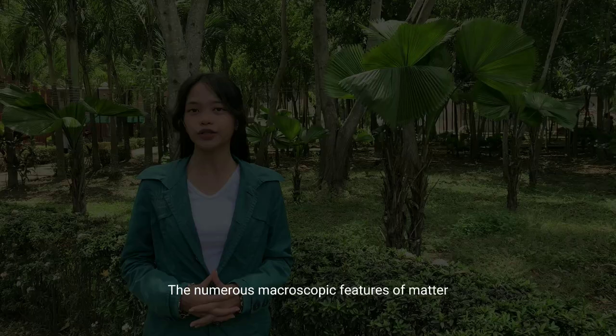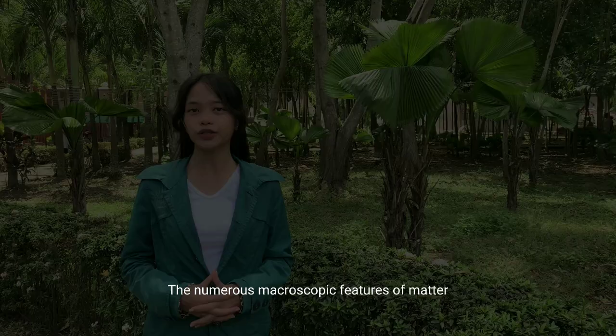The numerous macroscopic features of matter that you have learned are explained on a microscopic level by Dalton's theory of the atoms. For instance, an element with only one type of atom, like copper, cannot be divided into simpler substances — that is, substances with fewer types of atoms. The total mass of matter present when matter transforms from one type to another will remain constant, since neither atoms nor molecules are generated nor destroyed during a chemical change, according to the rule of conservation of matter.